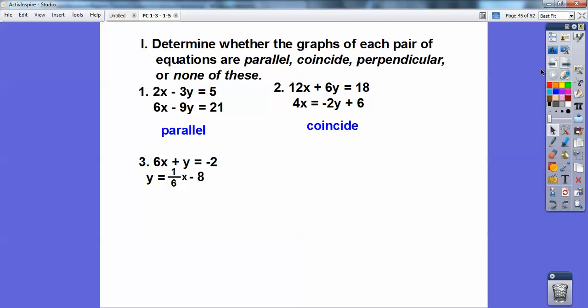What about these guys? The slope of this one is negative 6 over 1, so negative 6. The slope of this one is positive 1/6. So they're opposite reciprocals of each other. They are perpendicular.